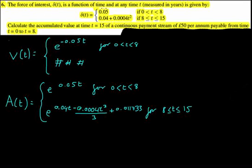The force of interest delta t is a function of time and at any time t measured in years is given by all of that. Calculate the accumulated value at time t equals 15 of a continuous payment stream of 50 pounds per annum payable from time t equals 0 to t equals 8.